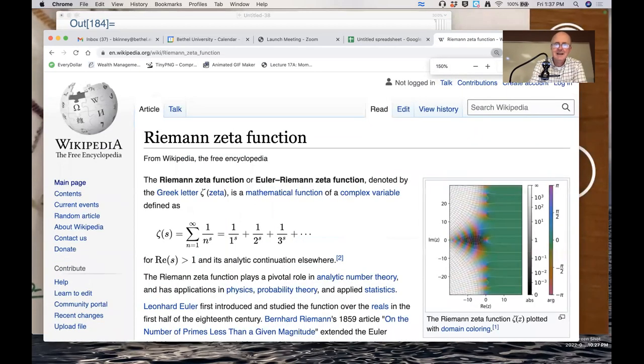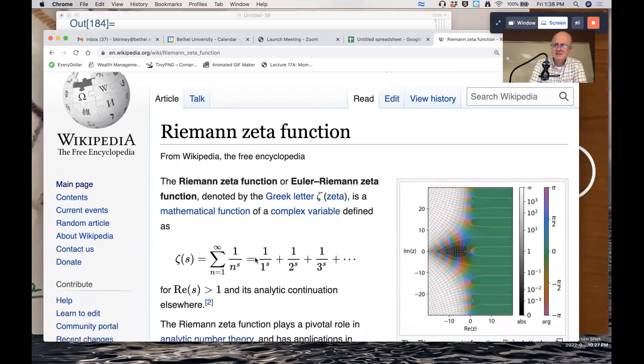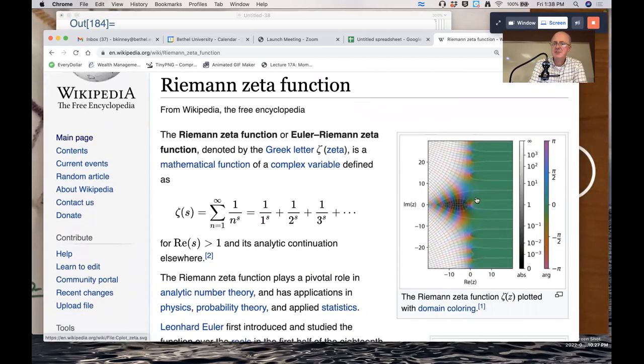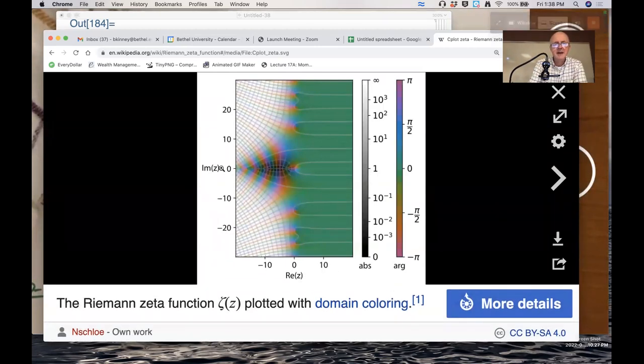Riemann zeta function. Yeah, there it is. Calling the input s instead of p. This definitely converges when s is a real number bigger than one. It also turns out to make sense even for complex numbers. What? Complex numbers? This is a picture of the complex plane here. Real part of z, imaginary part of z. I don't want to explain that. It would take too long.